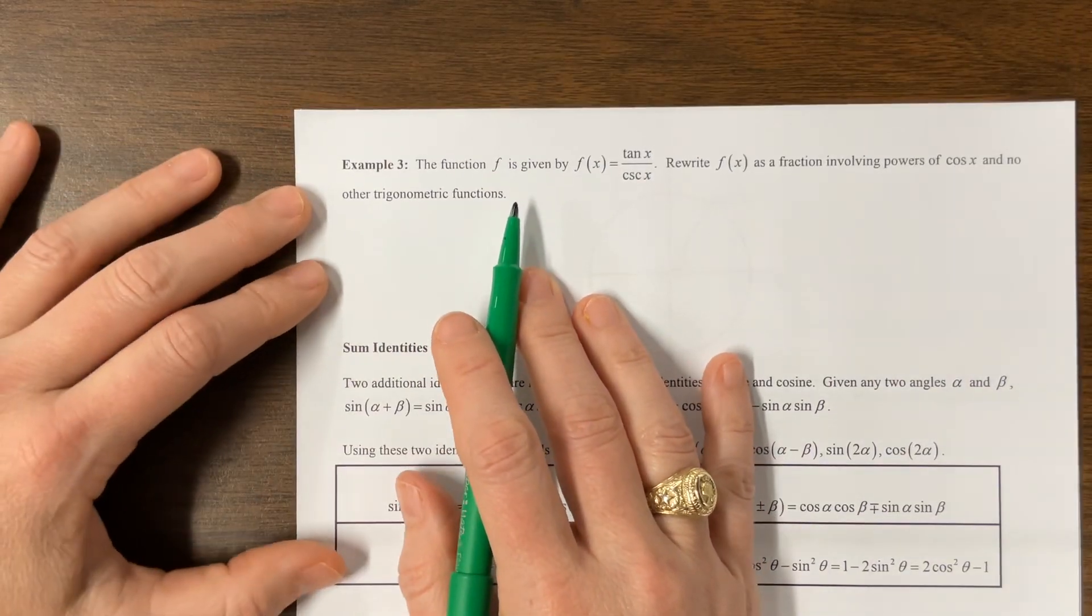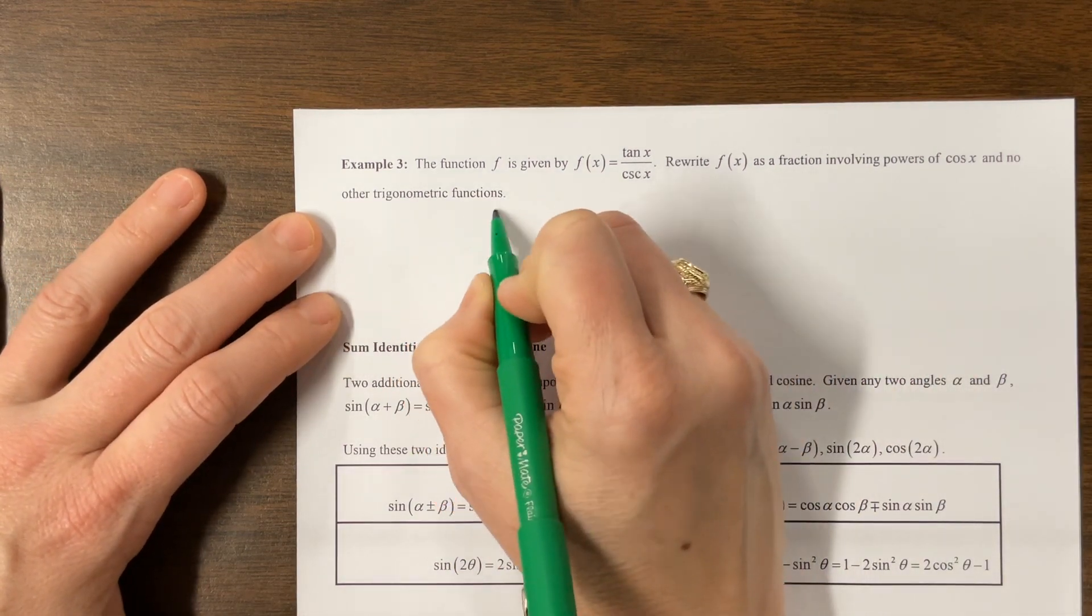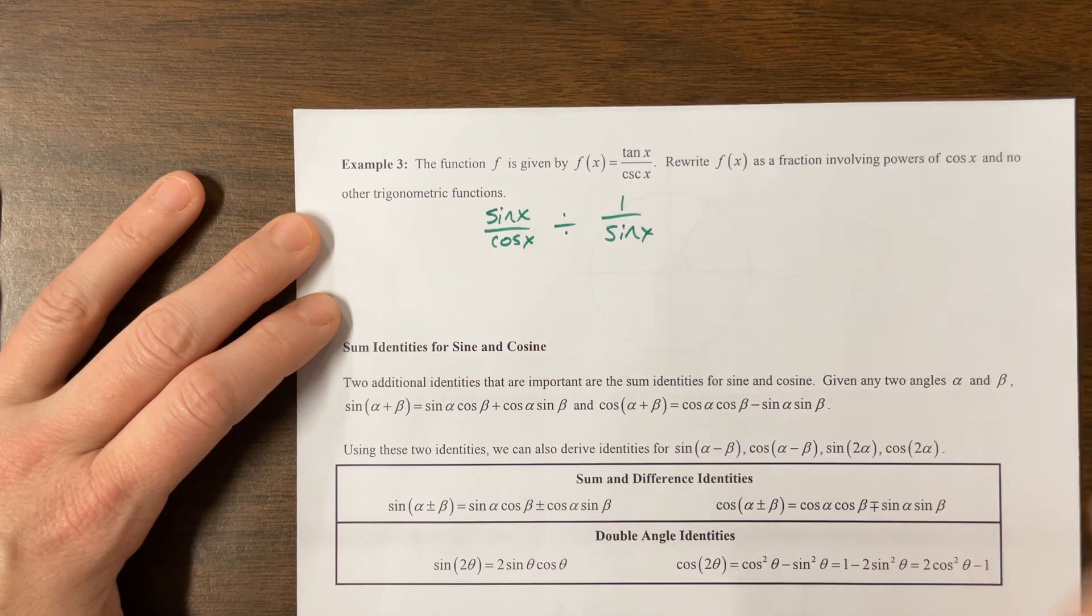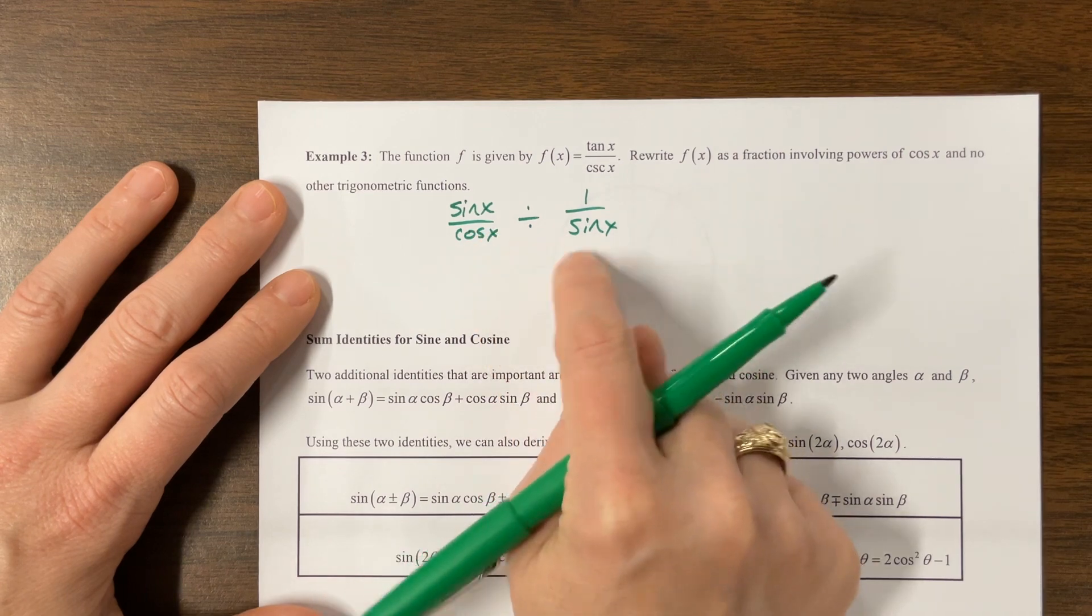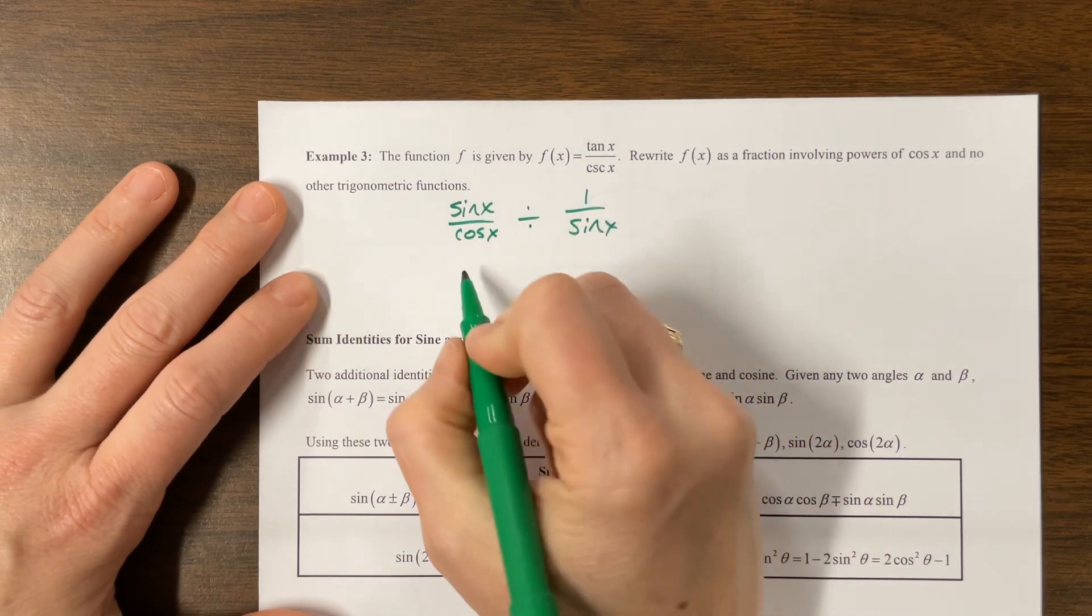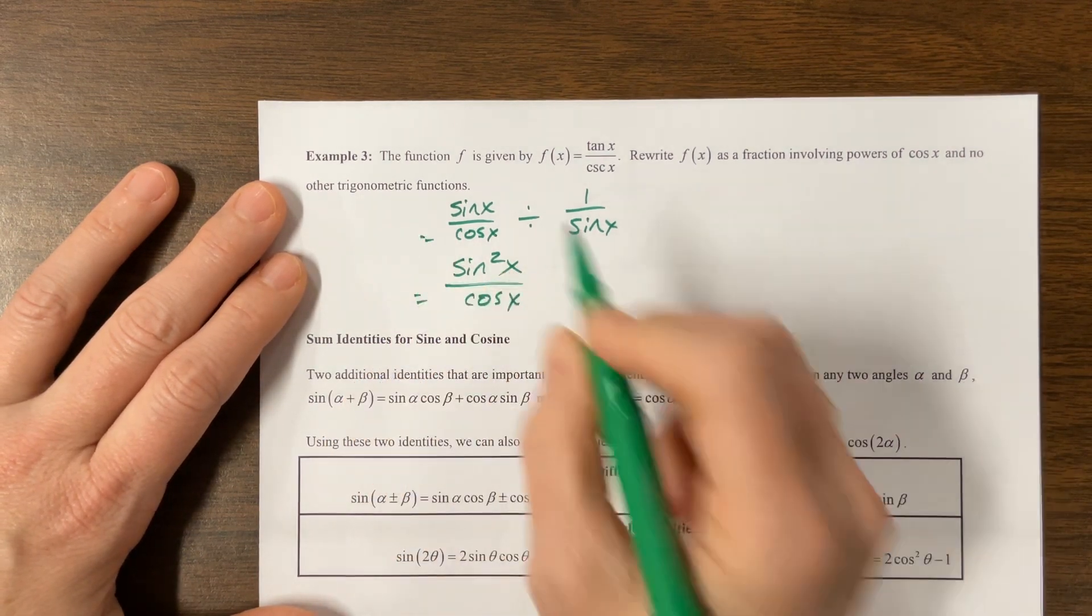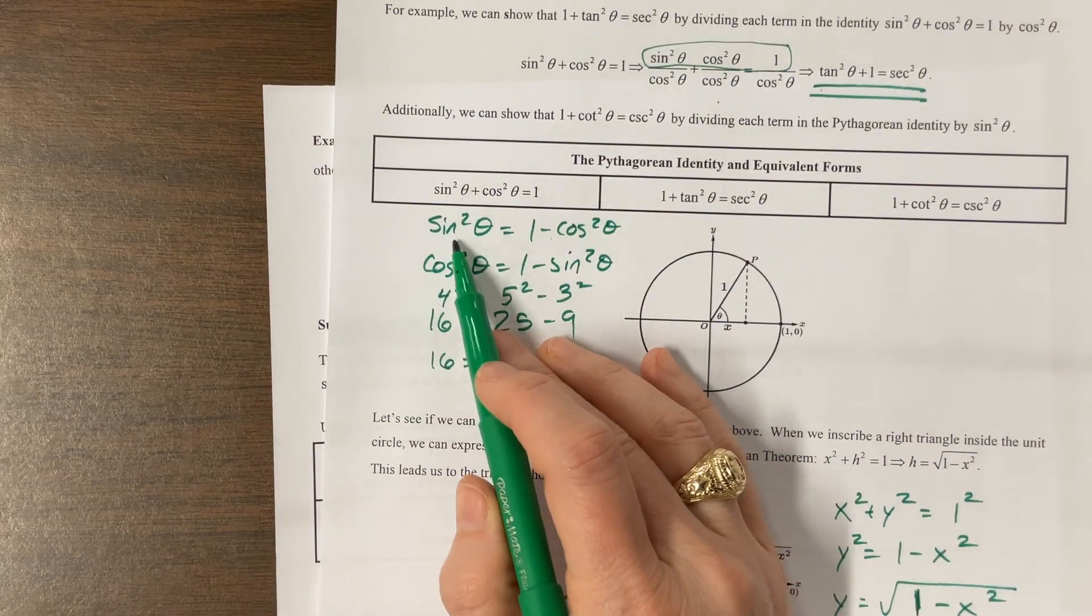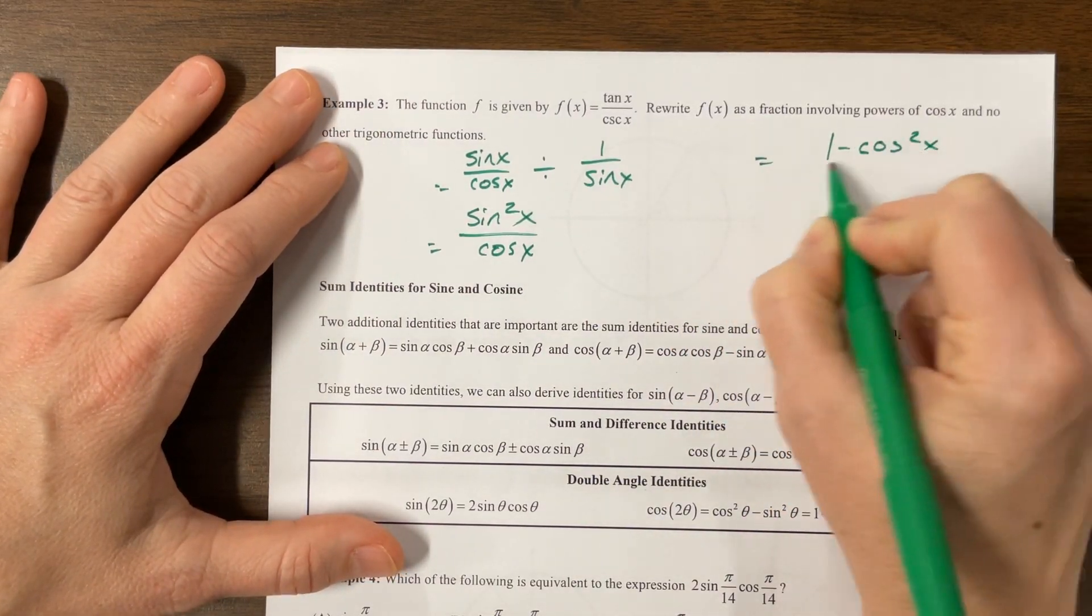Okay, the function is given by tangent over cosecant. Okay, so I can say the tangent is sine over cosine. Well, maybe we could write it this way. It's being divided by one over sine. Okay, and so then what do I want? Well, I have to multiply by, from dividing fractions, I multiply by the reciprocal. My kids would say, keep, change, flip. So keep, change, flip. And then this becomes sine squared x over cosine. Okay, that's equivalent to what came before. And then we know from our Pythagorean identity, that sine squared is equal to one minus cosine squared. And so this equals one minus cosine squared x over cosine x.